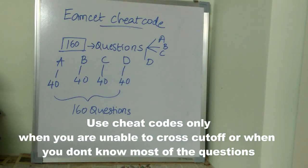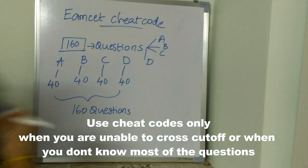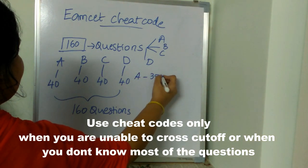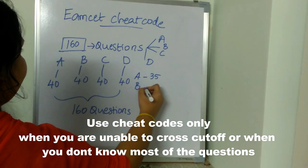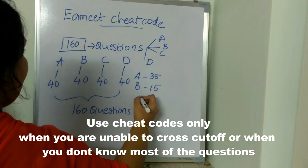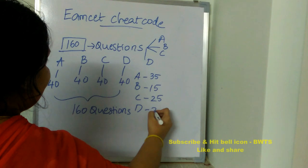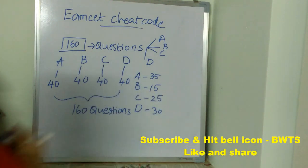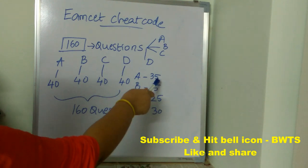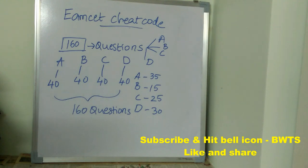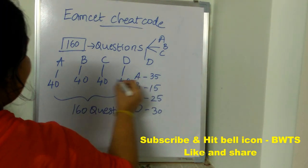Now let's take an example. Let's think a student got answer A for 35 questions, Option B for 15 questions, Option C for 25 questions, and Option D for 30 questions. So the student kept Option A 35 times, Option B 15 times, Option C 25 times, and Option D 30 times in the question paper.